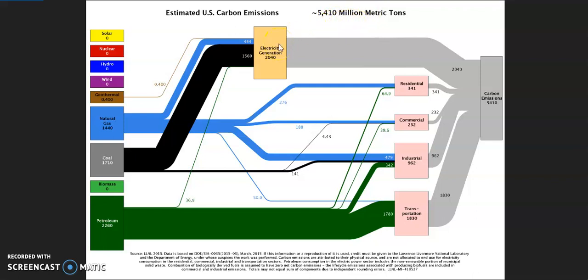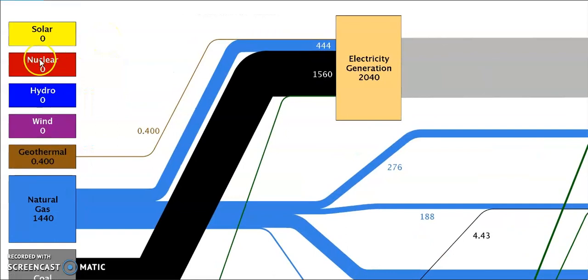If I discuss the different sectors and how much carbon emission happened from which sectors, first you can see renewable energy sources like solar. In case of solar there's zero carbon emission. For nuclear also there is no carbon emission.